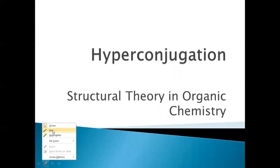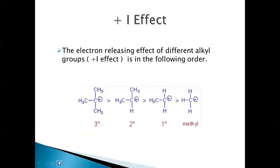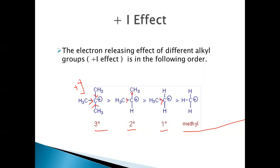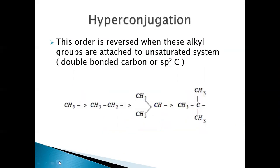In this video, let's see what hyperconjugation is. In my previous videos, I've already discussed the inductive effect, mesomeric effect, and their applications. Now let's see hyperconjugation. In the inductive effect, tertiary butyl carbocation is more stable than secondary, which is more stable than primary, and then comes methyl. This order exists because of the +I effect of methyl groups — there are three methyl groups sharing the positive charge.